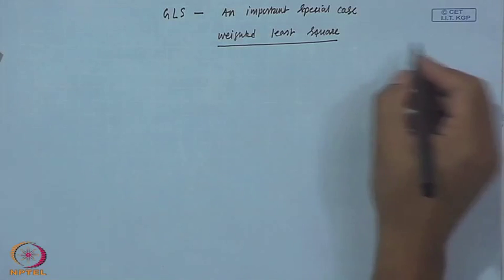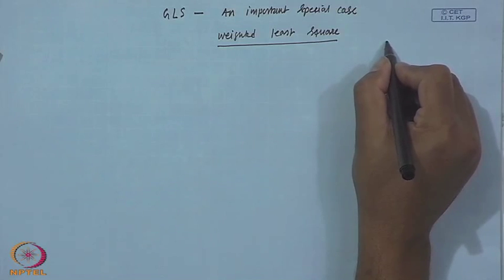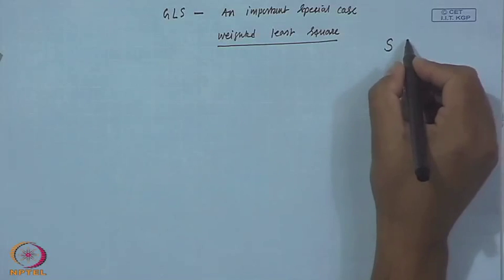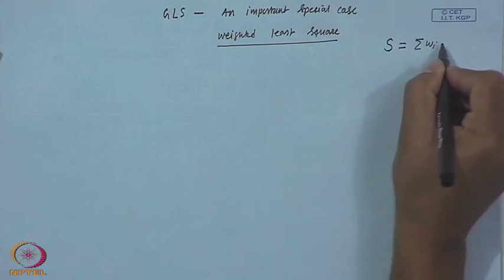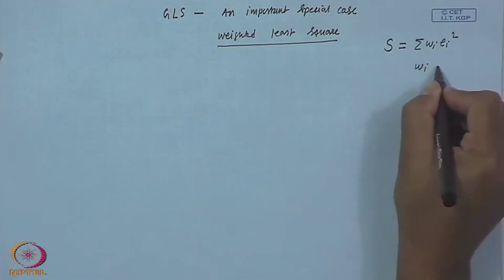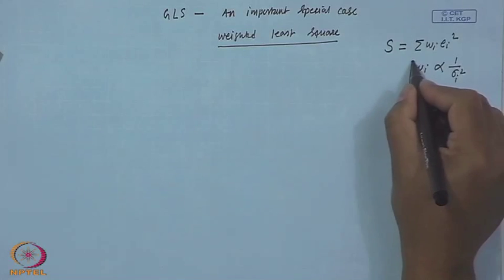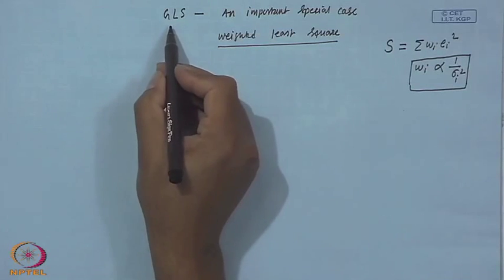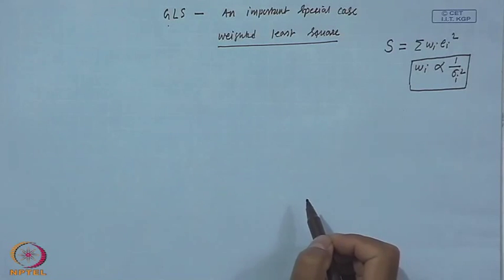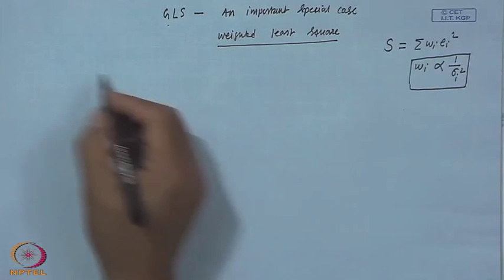At the beginning, I talked about weighted least square and said we find the regression coefficient by minimizing Σw_i·e_i², where w_i is proportional to 1/σᵢ². Now we know generalized least square, and weighted least square is a particular case where observations are uncorrelated and have unequal variance.